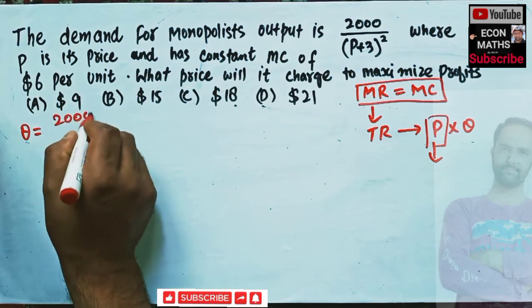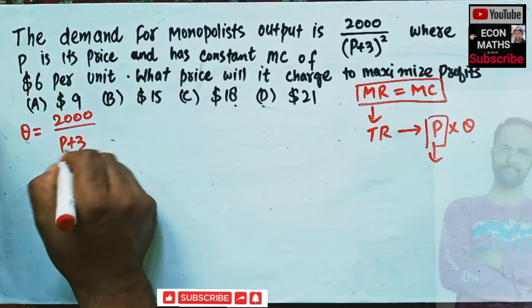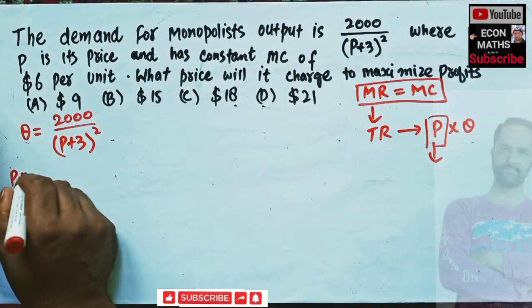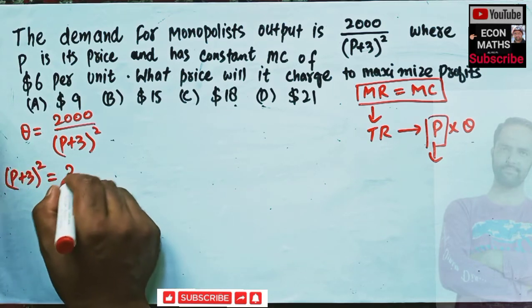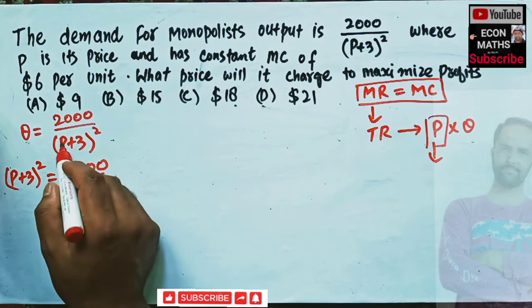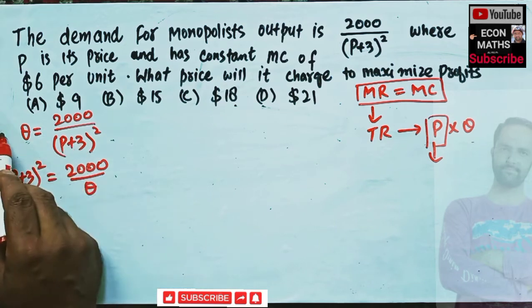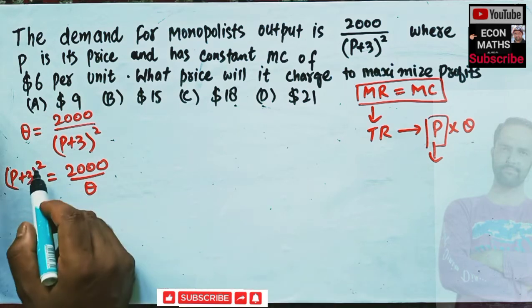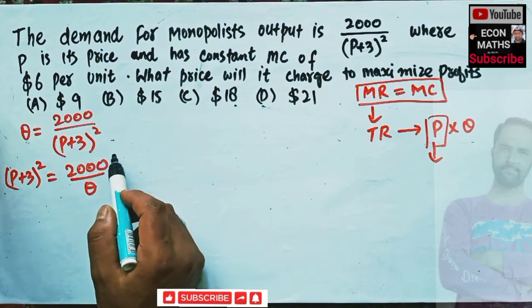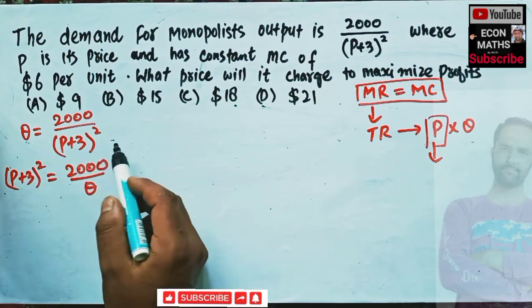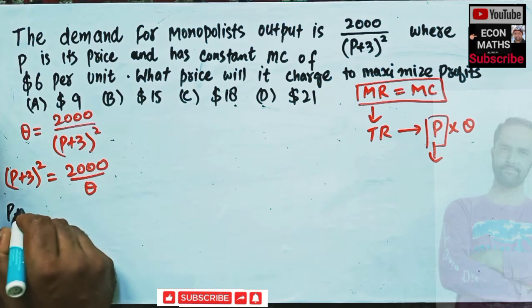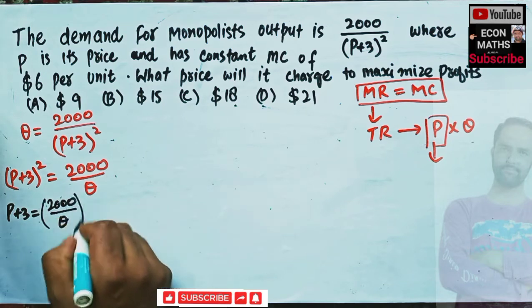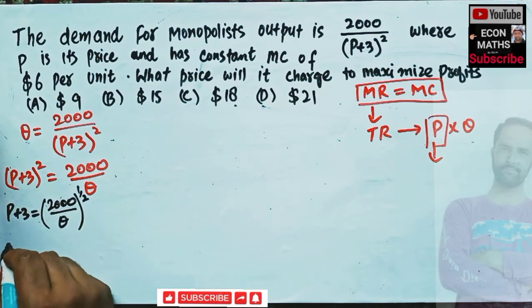We are given Q = 2000 / (P + 3)². We need to solve this for price to get the inverse demand function. So we can write (P + 3)² = 2000 / Q by transposing. Now taking the exponent to the other side — squaring becomes square root — we get P + 3 = (2000 / Q)^(1/2).